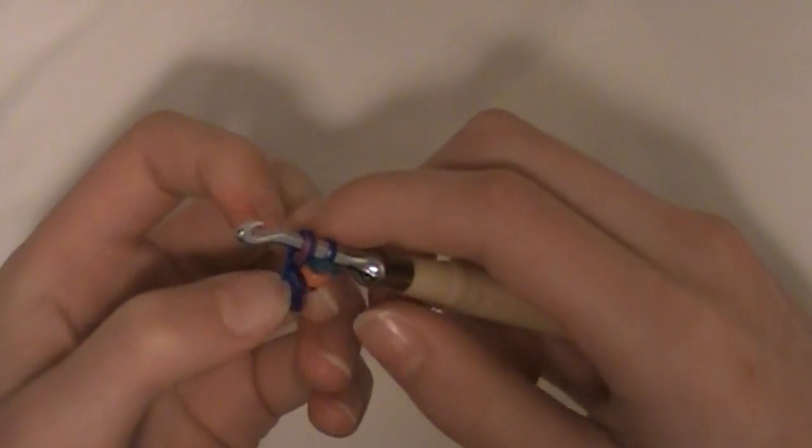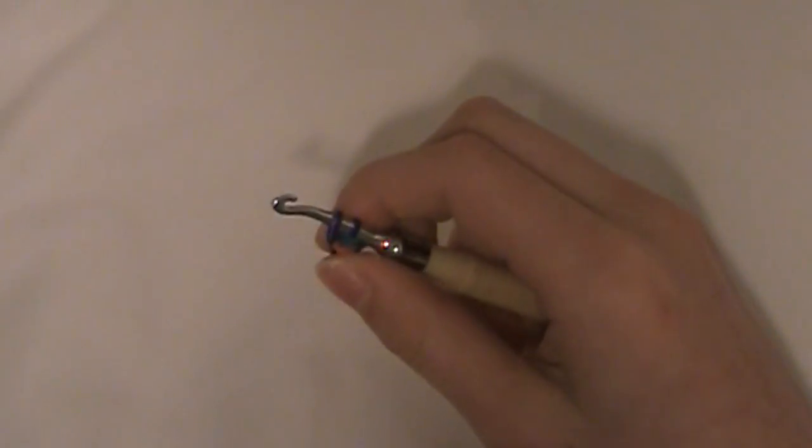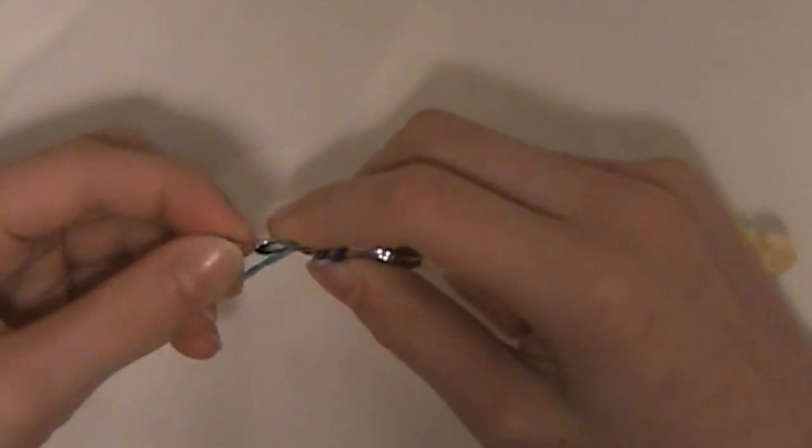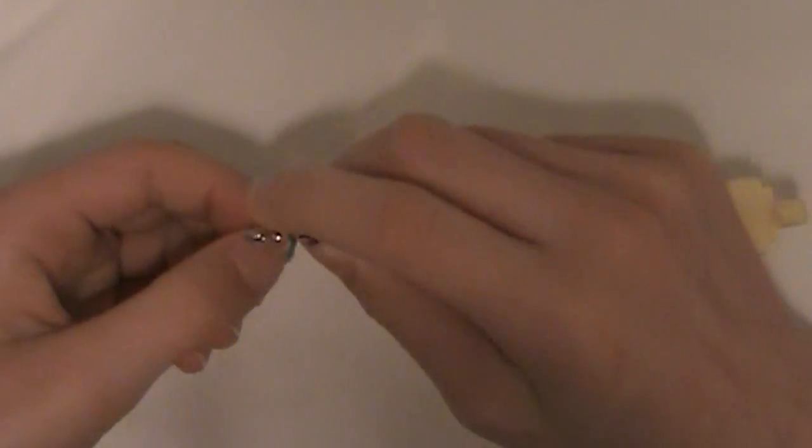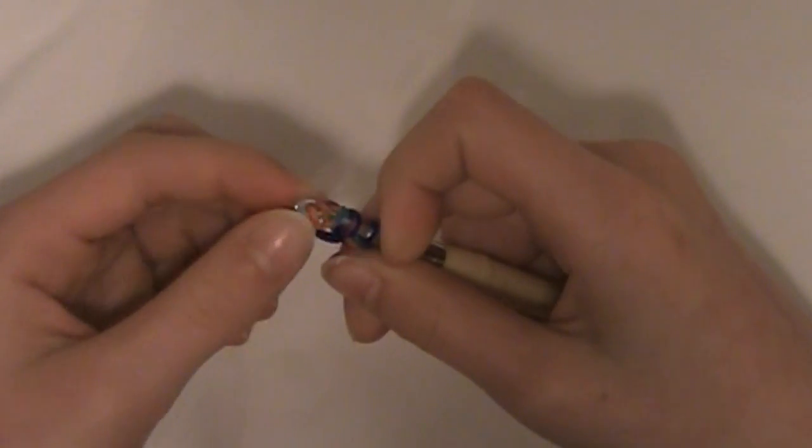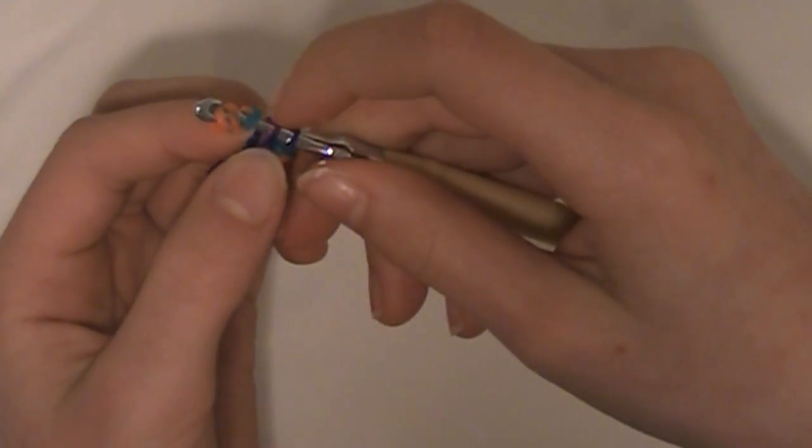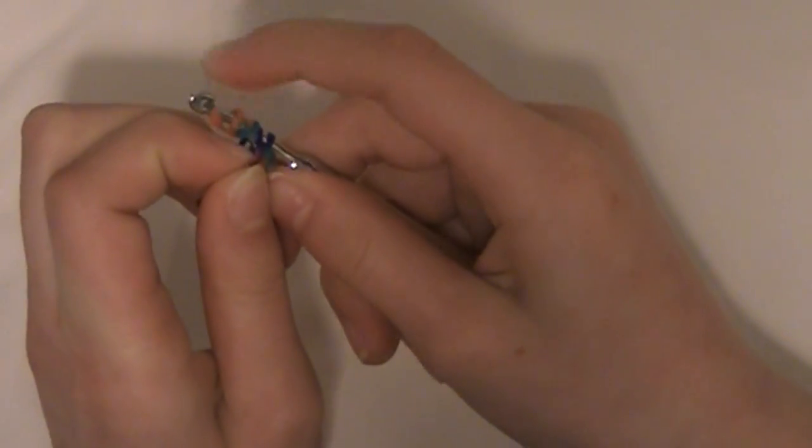We are going to take another band and do that again except that we're going to do it four times. Two, three, four. And instead of pulling both of these two loops over, we're just going to pull the one that doesn't have an orange band on it already.